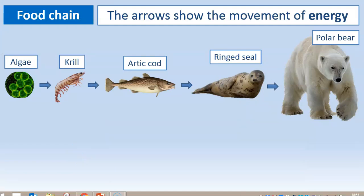Here we've got something called a food chain. The food chain shows us the movement of energy from organism to organism — basically what eats what, which you might have learned at Key Stage 2, but at Key Stage 4 it shows the movement of energy. We always start with the algae or plant, because it gets its energy from the sun, using sunlight energy in photosynthesis to create glucose. The krill then eats the algae, receiving energy from it. The krill is eaten by the cod, energy passes along to the ring seal, and then up to the polar bear.